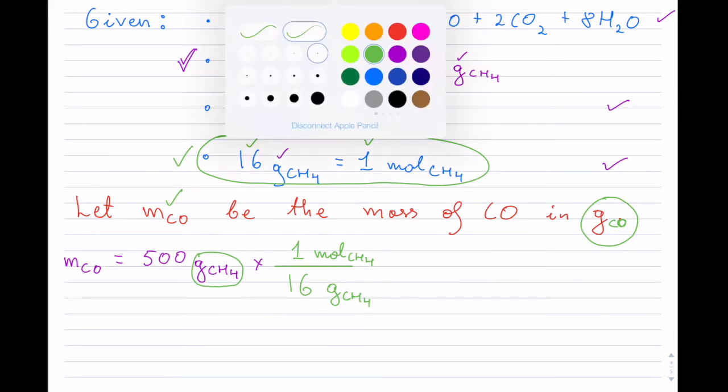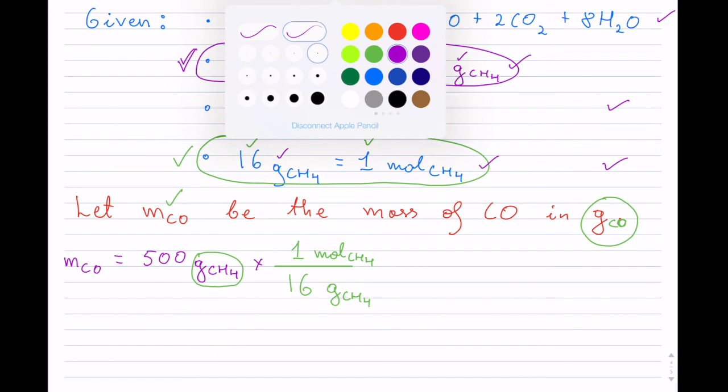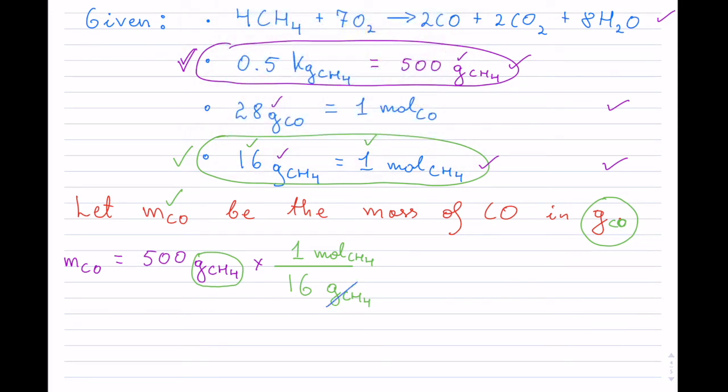And now I've used that given. So, so far, I have used this given right here, and I've used the last one. Remember, in chemical reactions, once you use a given, you cannot use it again. So, great. My grams of CH4 now cancel. But I'm stuck with these moles of CH4 on top.